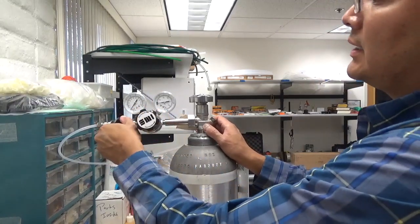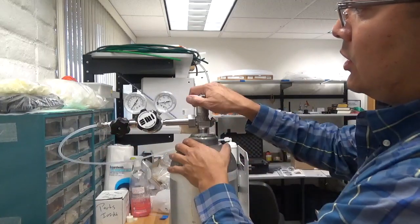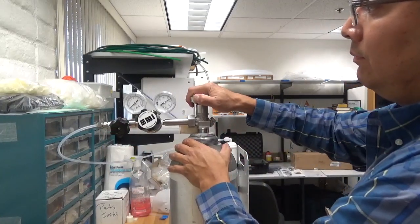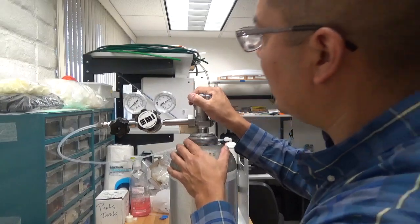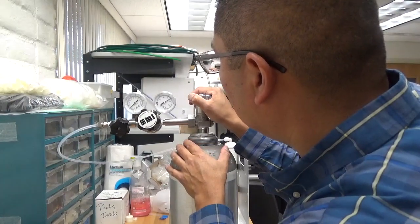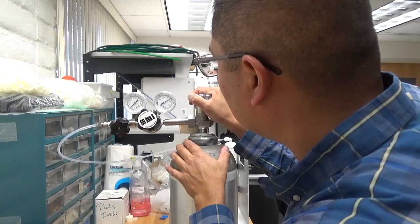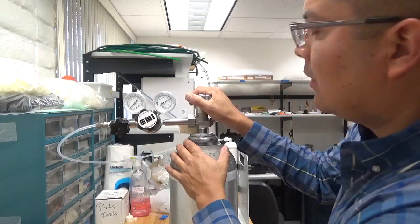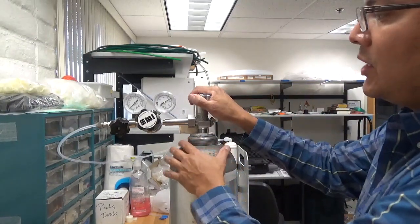Now we want to turn on the cylinder. Right now it's showing that there's roughly about 1,750 psi pressure.